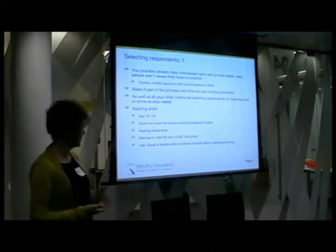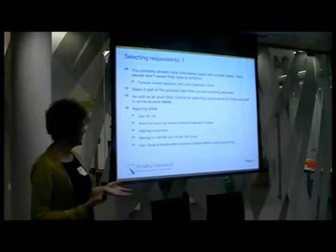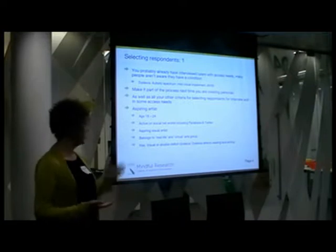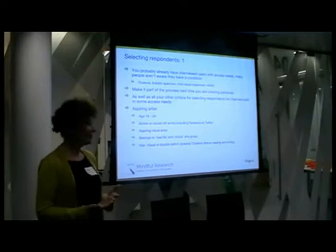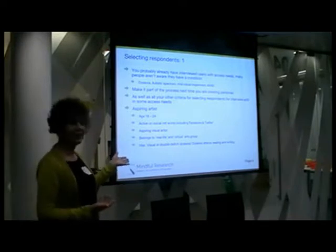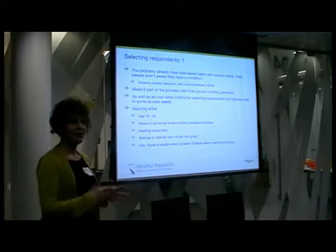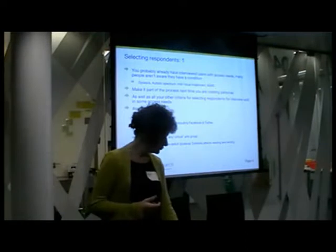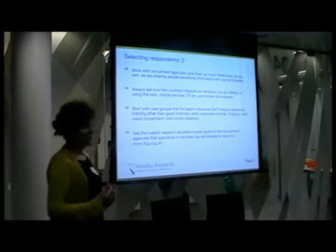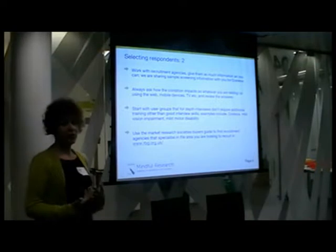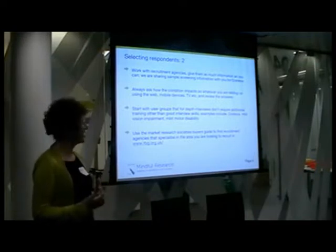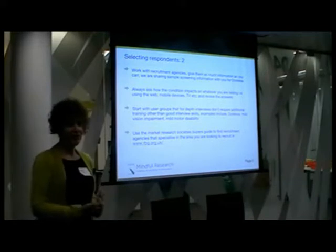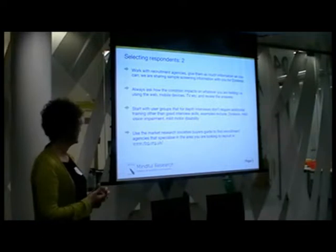You're going to be putting together a screener for whatever your target persona is. In this example I've got an aspiring artist, age 18 to 24, using social networks and active in real life and virtual art groups. Then you just add in one line: has a particular kind of dyslexia. I've added visual or double deficit dyslexia because that's the kind that normally impacts more on use of the web and reading and writing. Just bear in mind that not everybody knows what kind of dyslexia they have. So you've made the decision to involve people with dyslexia — now you have to go out there and find them.